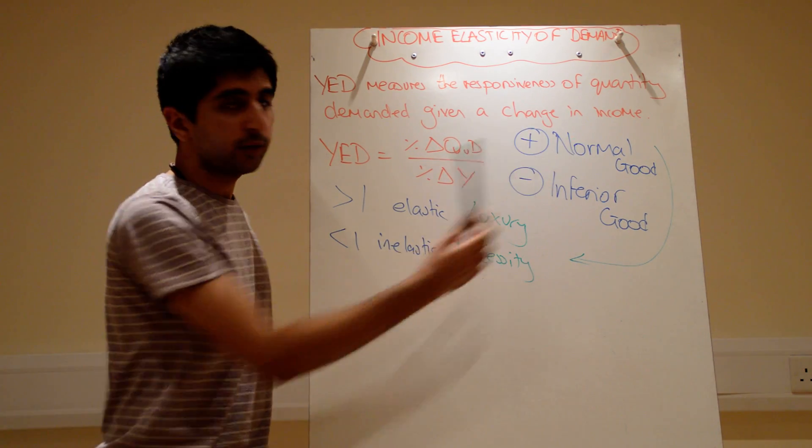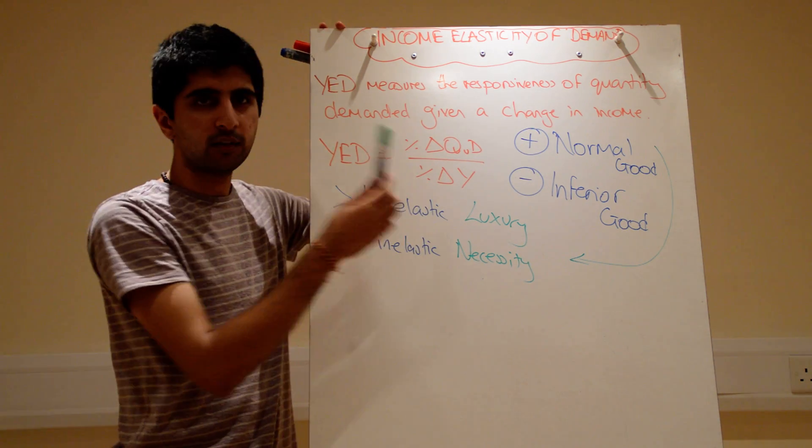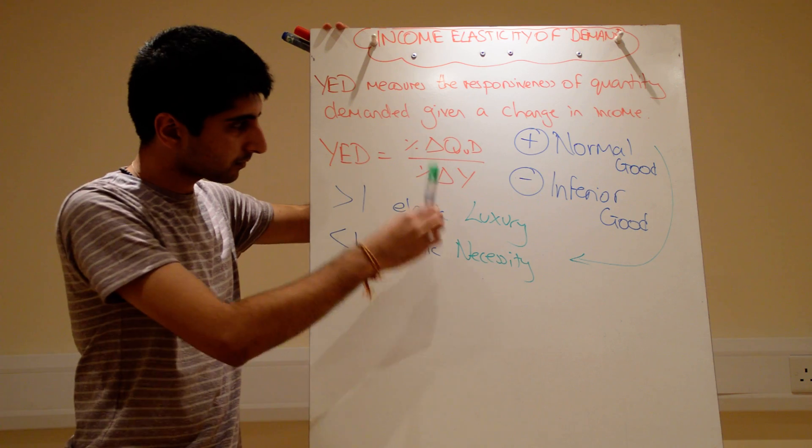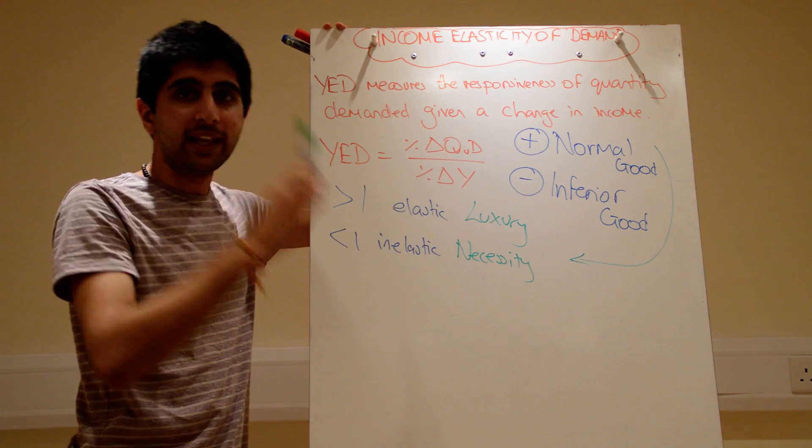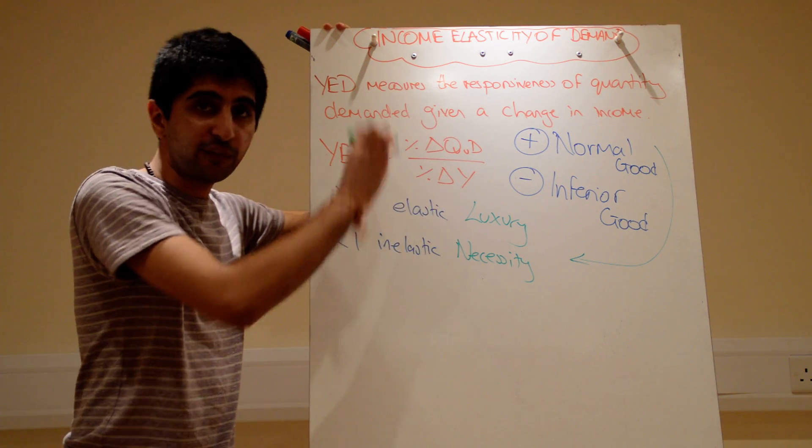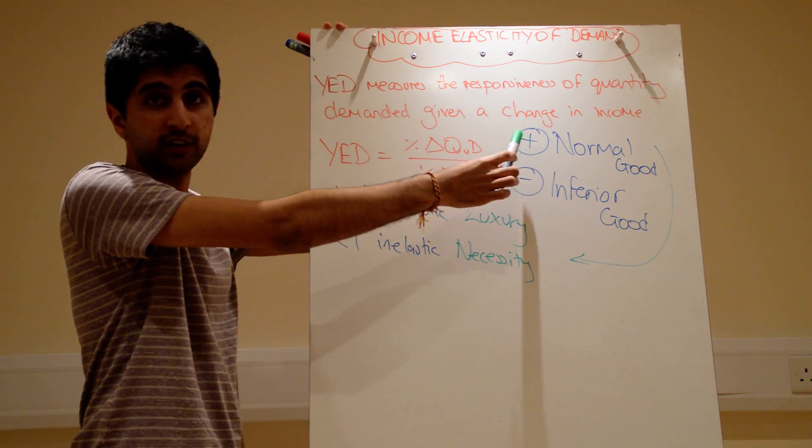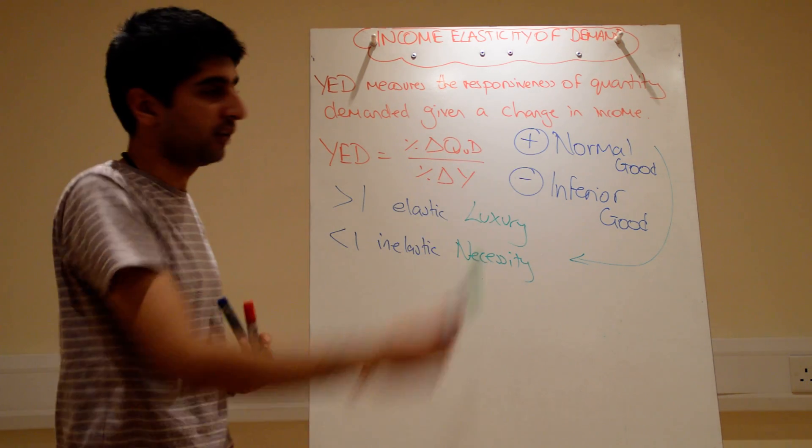So, you've worked out you've got a normal good, there's a positive relationship. If you want to work it out from the equation, it kind of makes sense. When income increases, positive, quantity demanded increases. Normal relationship. When income falls, quantity demanded falls. Negative times negative gets you a positive. That's why you get a positive number. And you can work the same up for inferior goods there.